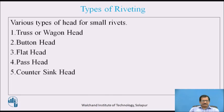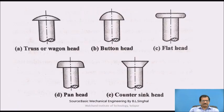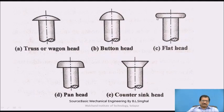Now, various types of head for small rivets are: truss or wagon head, button head, flat head, pan head, and countersink head. The truss or wagon head is similar to the head studied under heavy component riveting. Button head is also the same. Flat head has a curved surface on the side but the above surface is flat, which will be accommodated in the countersink or step drilling provided on the plate, so it will not extend out of the plate surface. Pan head is again the shape of a pan. Countersink head was also discussed in the last part of this video.